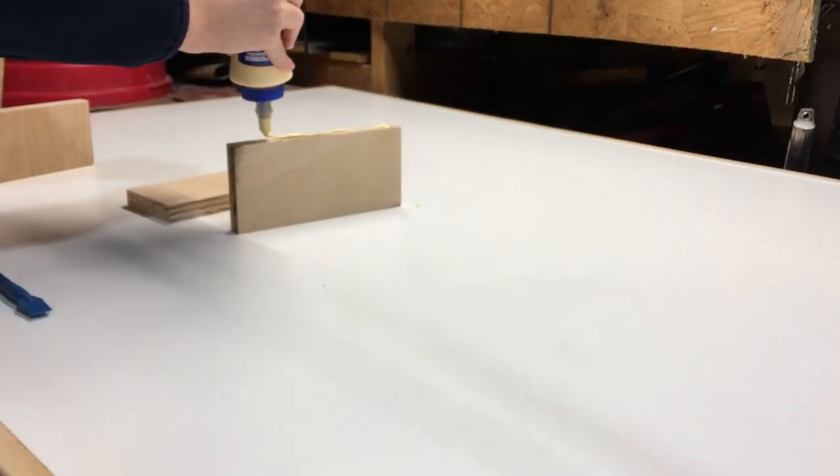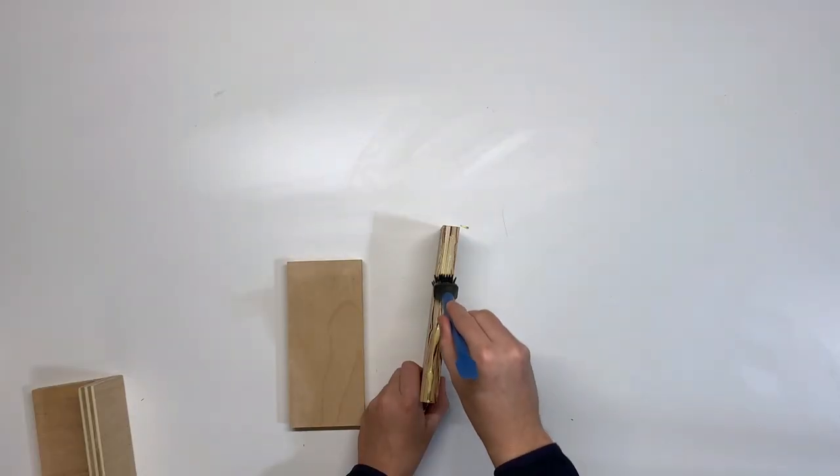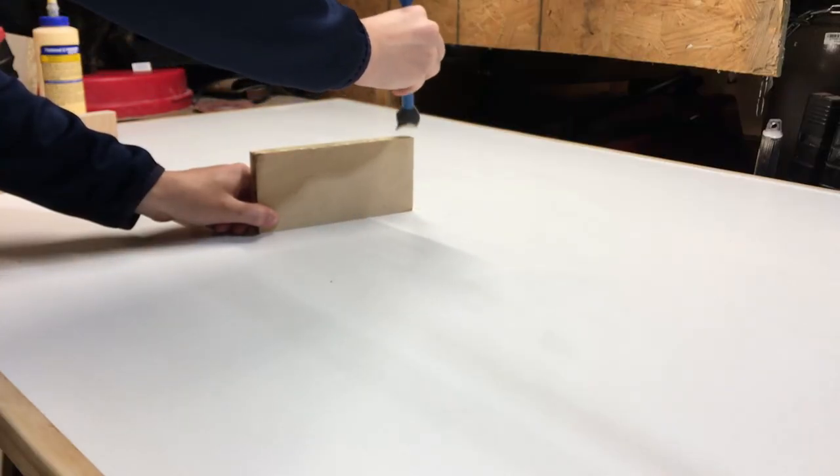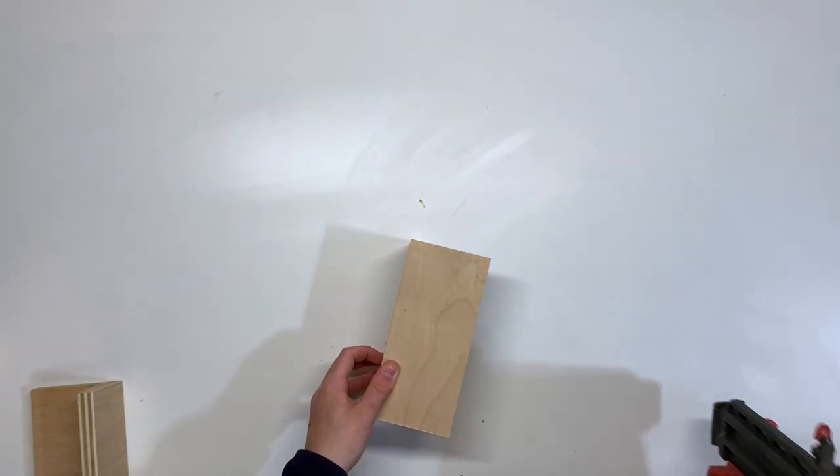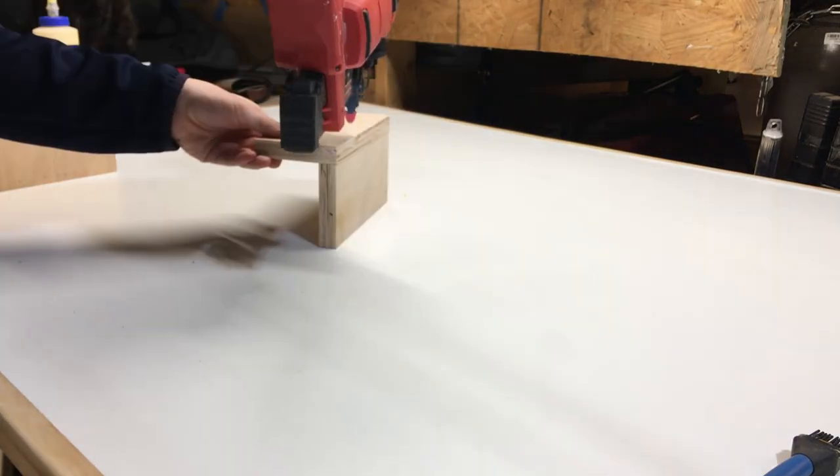Blowout occurs because the nail follows the natural grain of the wood. This usually isn't a problem for plywood. However, it still can and will happen occasionally, like this.